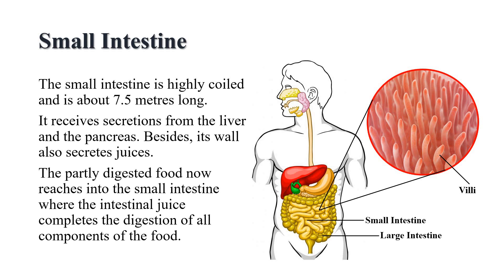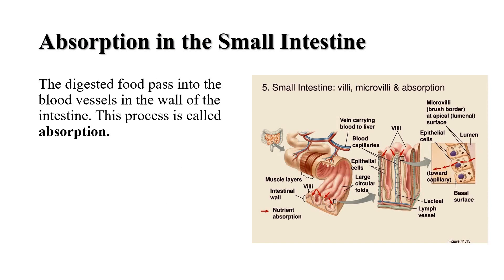The partly digested food now reaches the lower part of the small intestine where the intestinal juice completes the digestion of all components of the food. Carbohydrates get broken into simple sugars such as glucose, fats into fatty acids and glycerol, and proteins into amino acids. The digested food can now pass into the blood vessels in the wall of the intestine. This process is called absorption. The inner walls of the small intestine have thousands of finger-like outgrowths called villi.